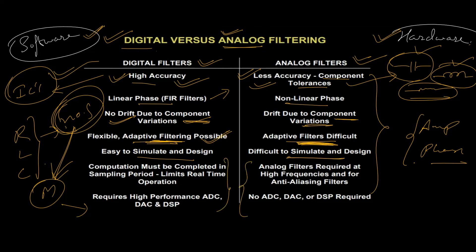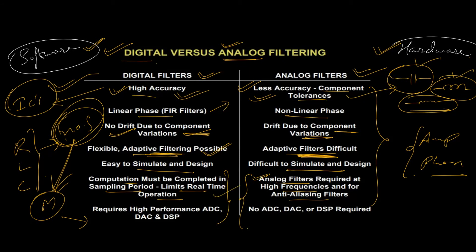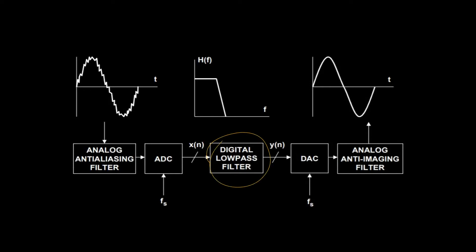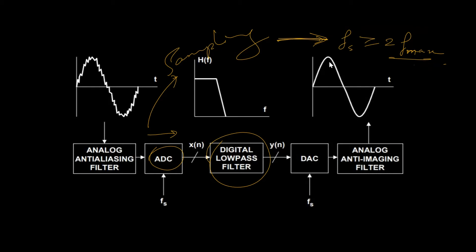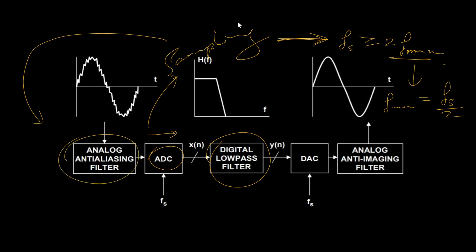Now let us discuss the limitations of digital filters over analog filters. Looking at the block diagram, if we want to implement digital filters, the analog signal needs to be converted to digital form first using an ADC. Analog to digital conversion requires sampling of the analog signal, and this must not exceed the Nyquist rate — the sampling frequency must be greater than or equal to twice the maximum frequency, or the maximum frequency of the signal must not exceed FS divided by 2. This is usually done using anti-aliasing filters, which are typically low-pass filters.